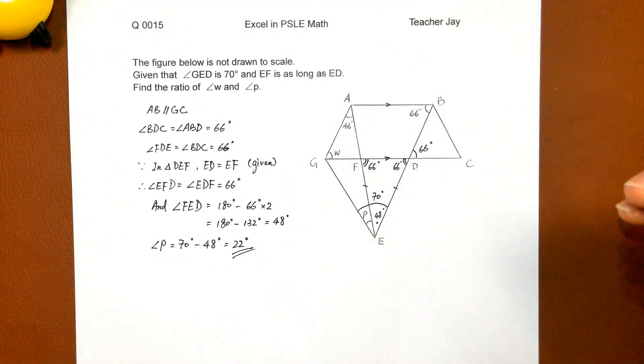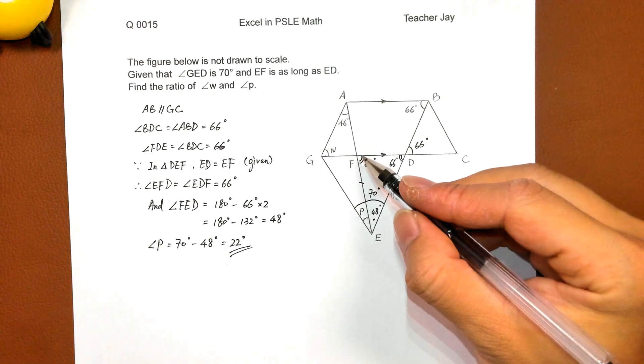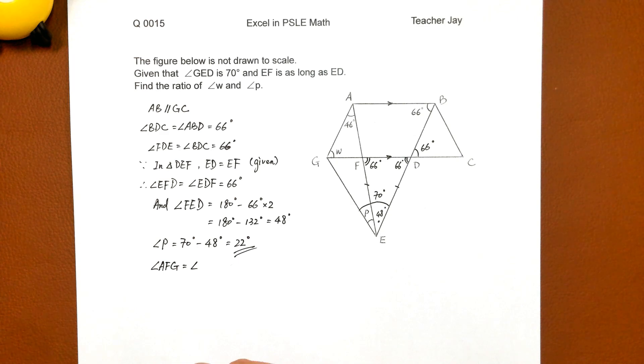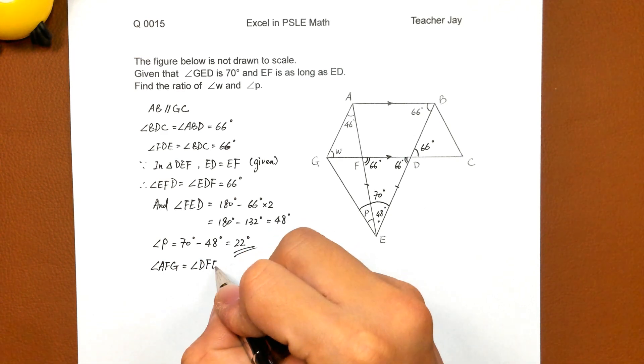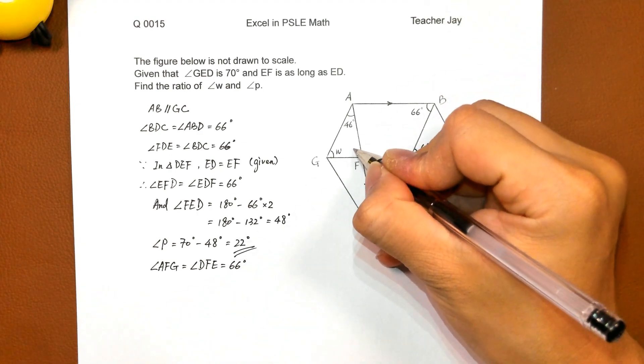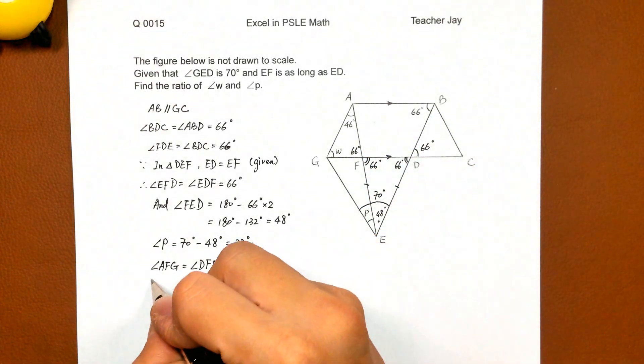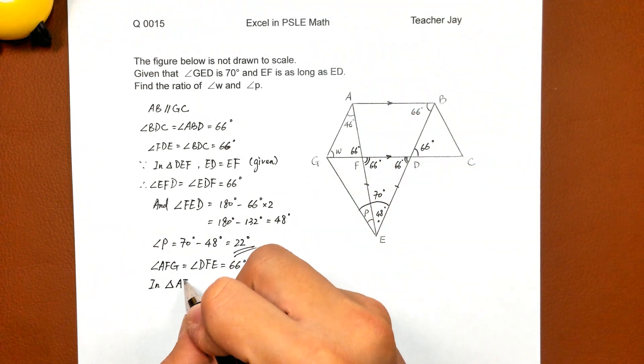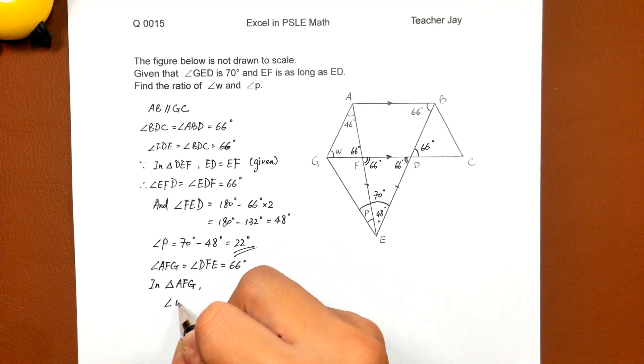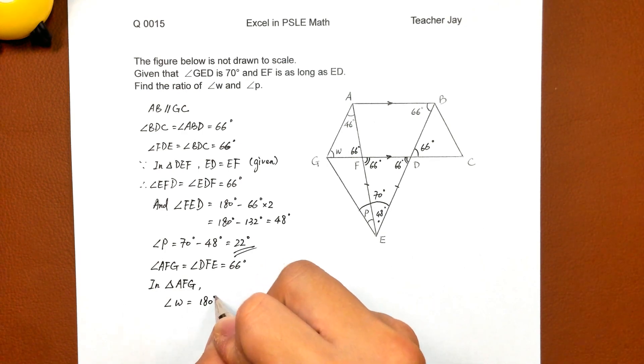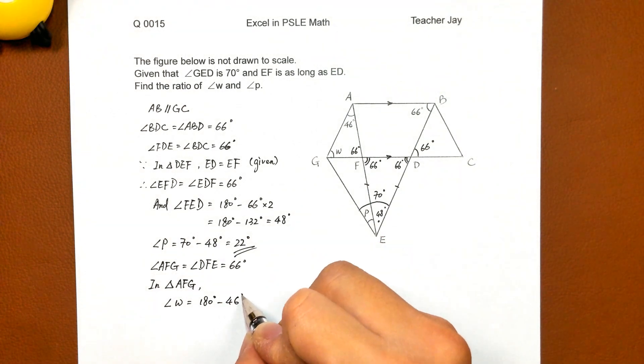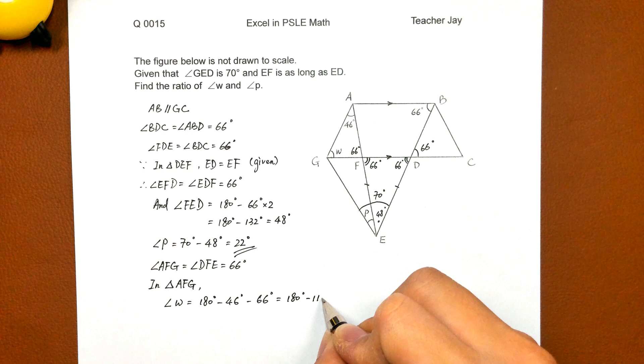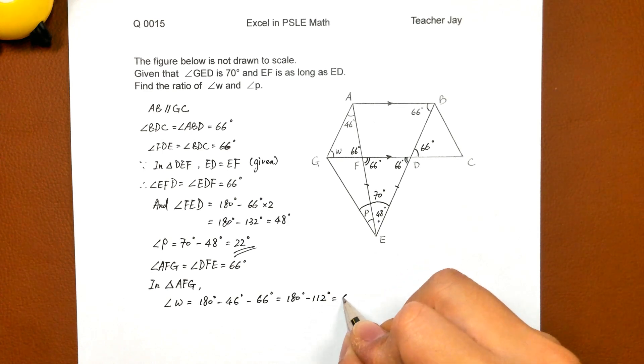And for angle W, it's quite easy. We know here 66, the vertically opposite angle, which is angle AFG, equals angle DFE, 66. So in triangle AFG, angle AFG equals 180 degrees minus 46 minus 66. 180 degrees minus 112 degrees, 68 degrees, the answer.